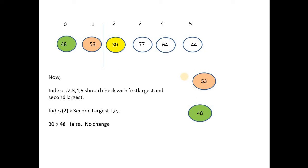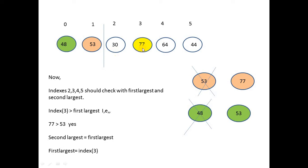Moving to the third index, the value is 77. Is 77 greater than first largest (53)? True. So 53 is no longer the first largest. The old first largest becomes the new second largest, and the new first largest becomes num[3]. So second largest becomes 53 and first largest becomes 77.